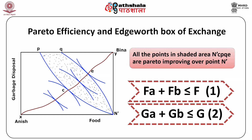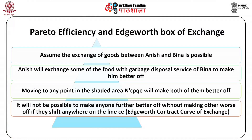Assume that the initial endowment at point N' is not Pareto-optimal. At this point, Anish has only food and Bina has only garbage disposal. If exchange between them is possible, Anish will exchange some food for garbage disposal service from Bina to make himself better off. Moving to any point in the shaded area N'CPQE will make both of them better off.